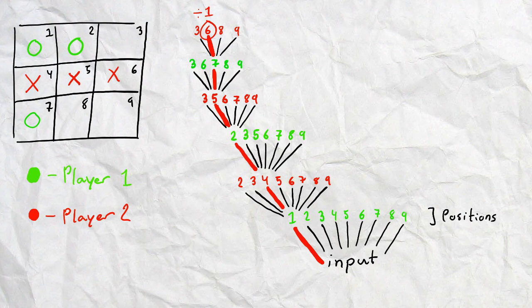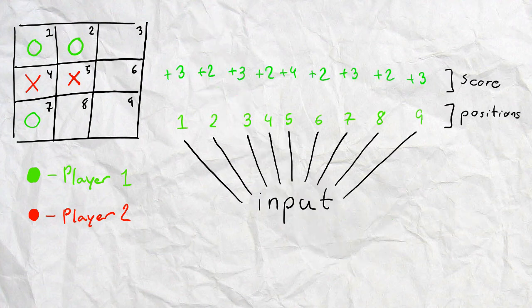If we do that for all branches, we will get a sum total of positions you can place in. And that way, we will know which position is the best.